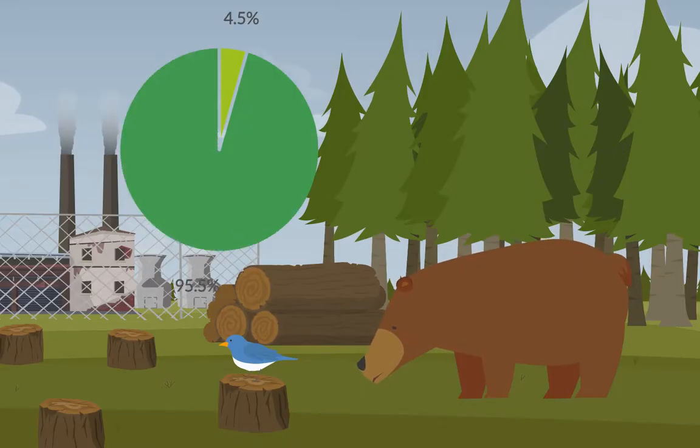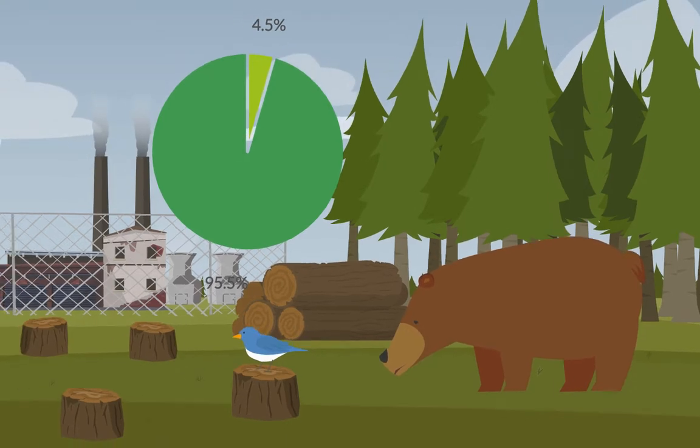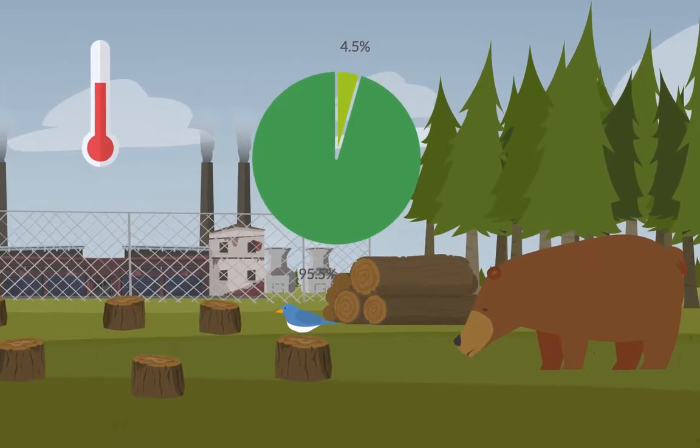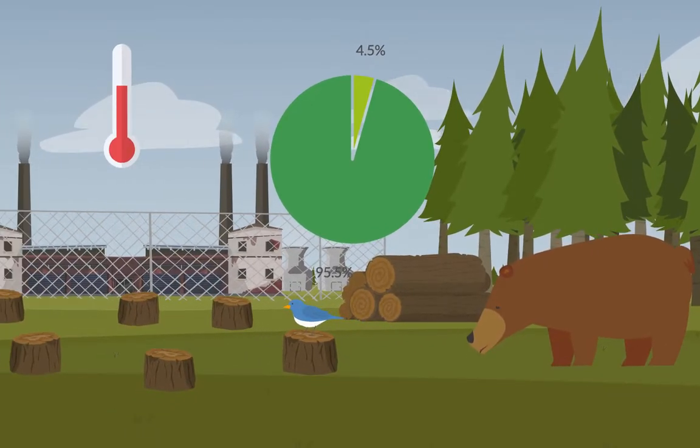The World Bank estimates that developing countries need to invest around 4.5% of GDP to achieve the Sustainable Development Goals and at the same time limit global warming to no more than 2 degrees Celsius.